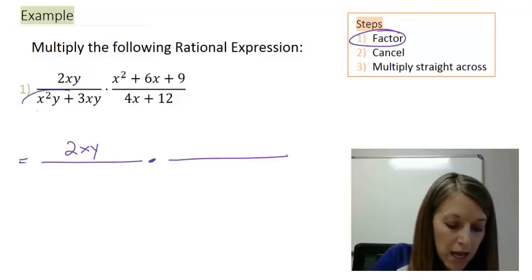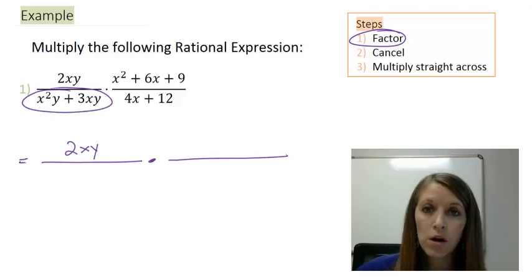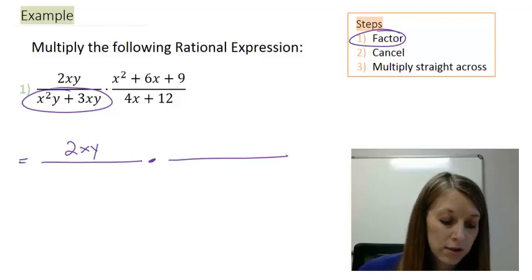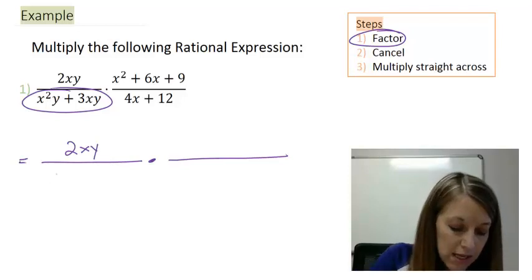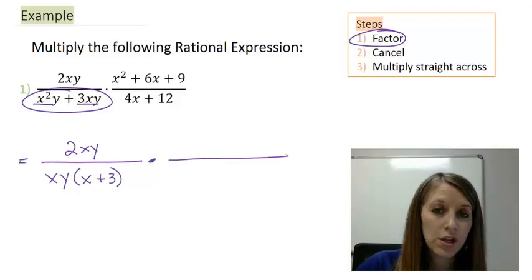Switching focus to my denominator, it looks to be in okay order, but it also looks like I have a common factor. It looks like my common factor is x and a y. So let me factor those out. That leaves me with an x from my first piece and a 3 from my second piece. That is factored completely.